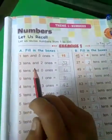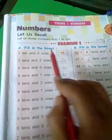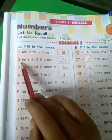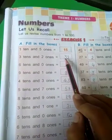Listen very carefully. 1 ten and 5 ones is equal to 15. 3 tens and 2 ones is equal to 32.